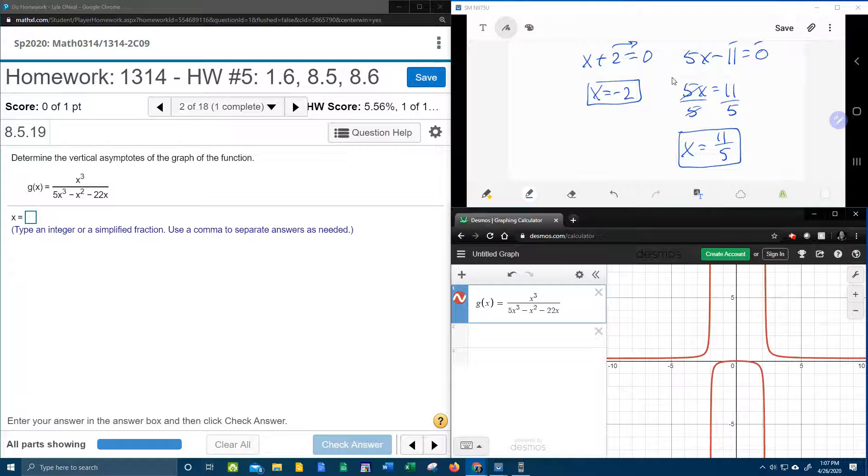And those should be our 2 asymptotes. Now, before I plug that into MyLabMath, I want you to notice down here I've got that graph graphed in Desmos. And we can see here,